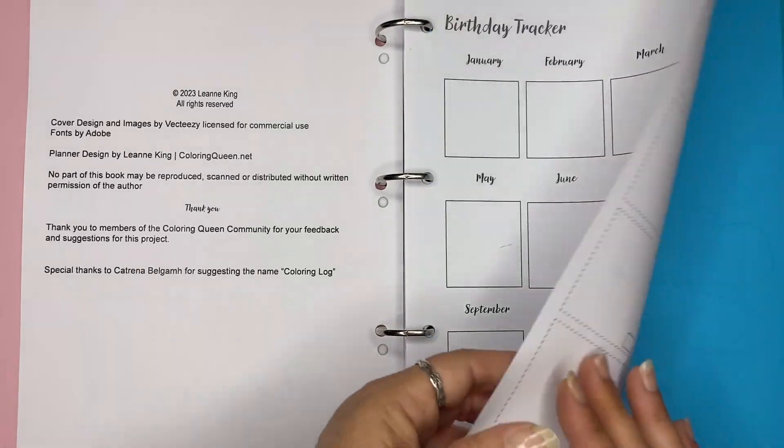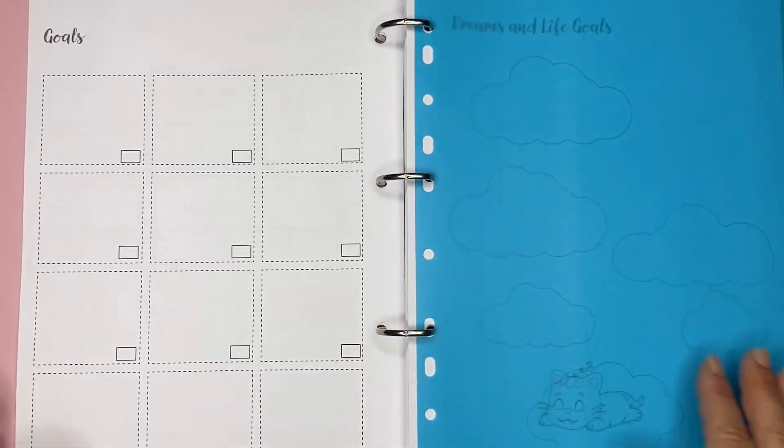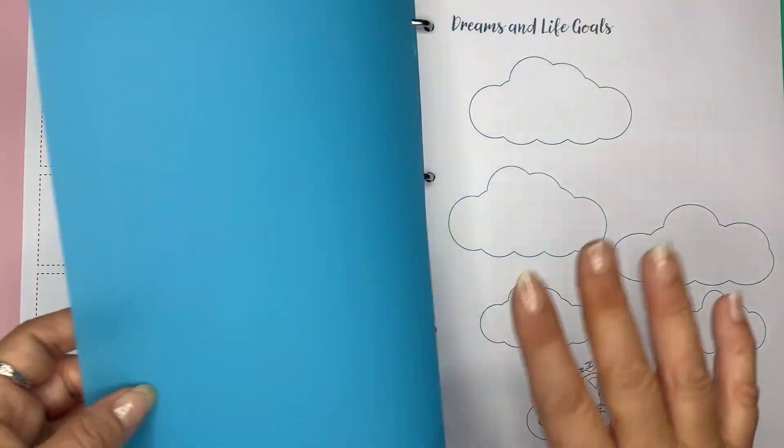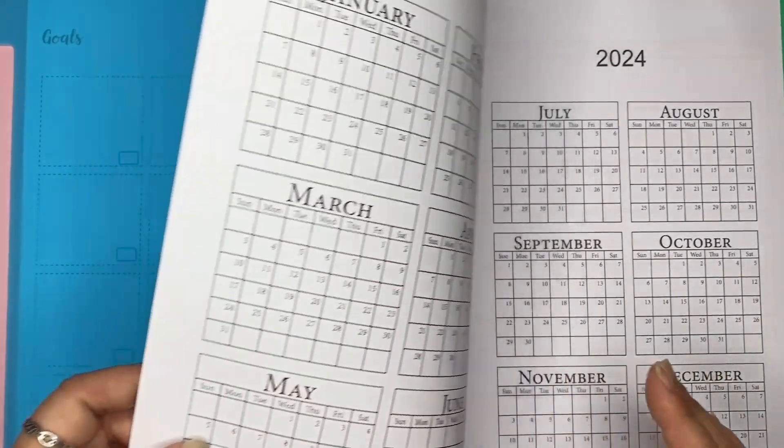I'm no longer going to have sticky notes on what I want to colour. I'm going to know my dreams, what I want to achieve this year, especially related to colouring.